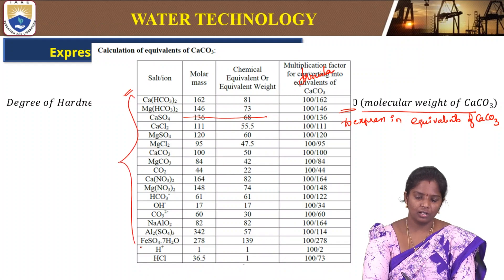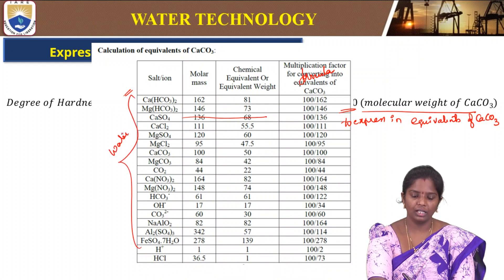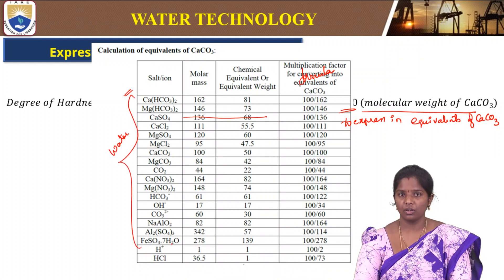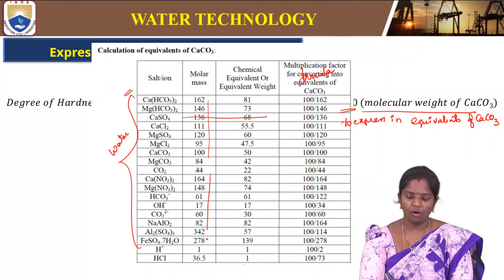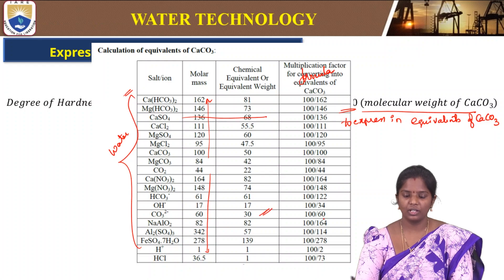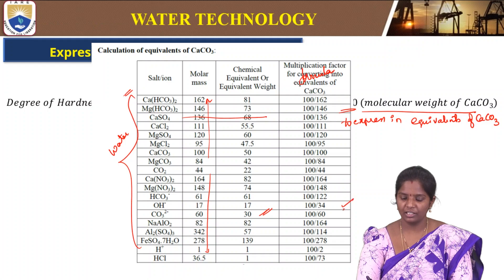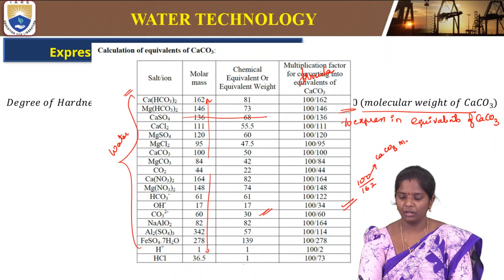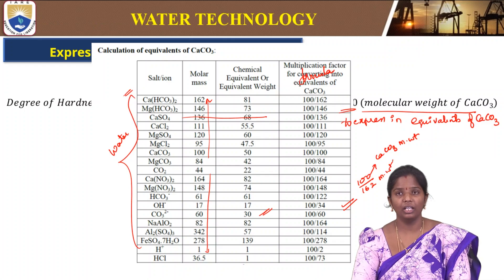These are the salts present in a water sample — generally the hardness-causing salts responsible for hardness in water. These are the molecular weights of the corresponding salts present in the water, and this is the equivalent weight or chemical equivalent of each particular salt. The multiplication factor is 100 divided by, for example, 162, which is the calcium carbonate molecular weight, divided by the molecular weight of the corresponding salt.